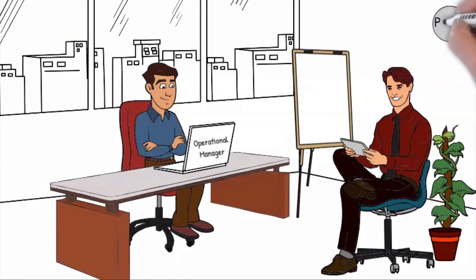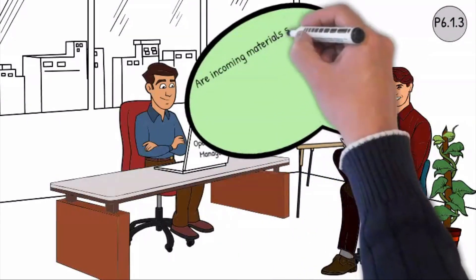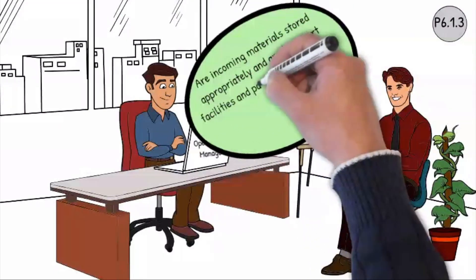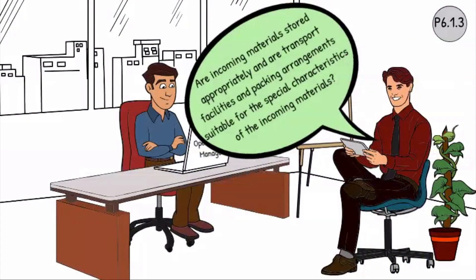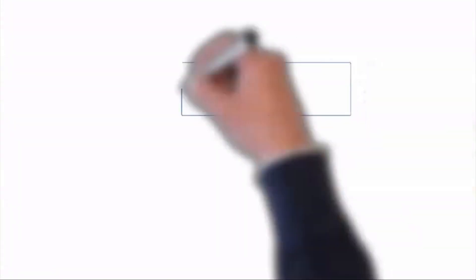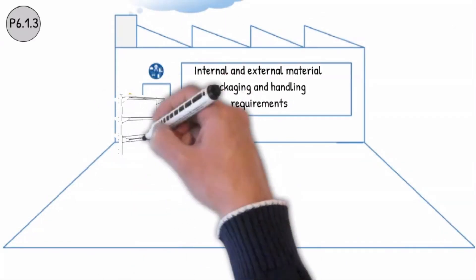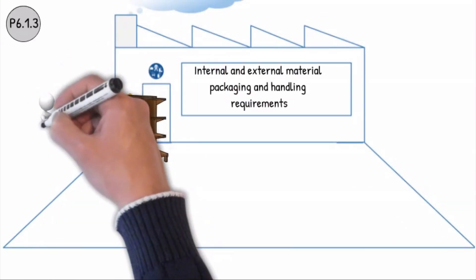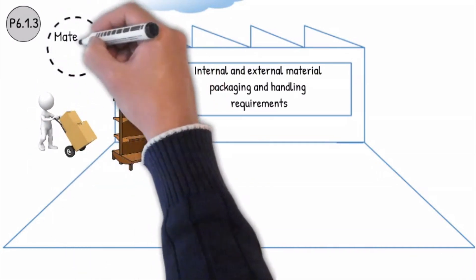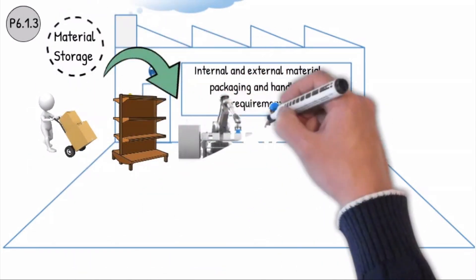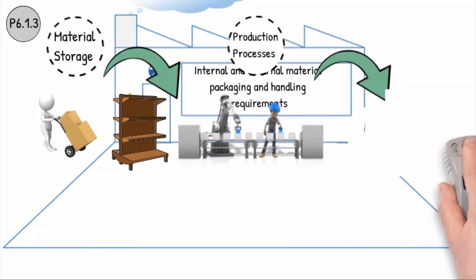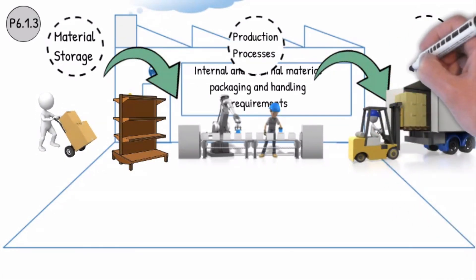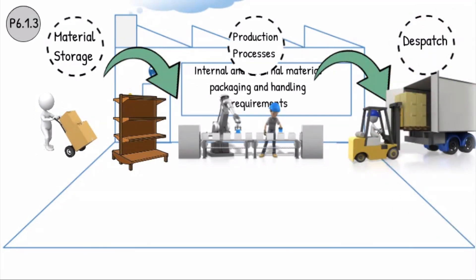Question P6.1.3: Are incoming materials stored appropriately, and are transport facilities and packing arrangements suitable for the special characteristics of the incoming materials? Suitable transport methods must be used to protect the products from damage and contamination. During manufacture and internal transport between processes and to and back from outsourced services, the store areas, workstations and containers must be appropriate for the tidiness and cleanliness required for the components, semi-finished parts and final assembled parts.